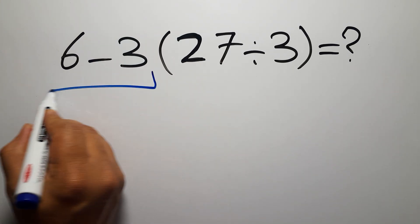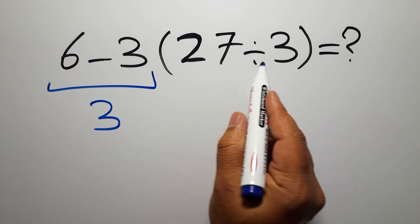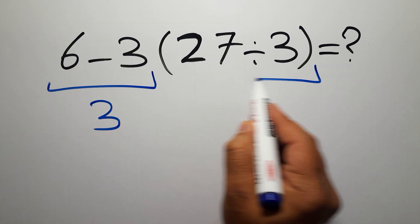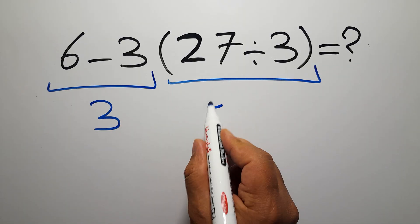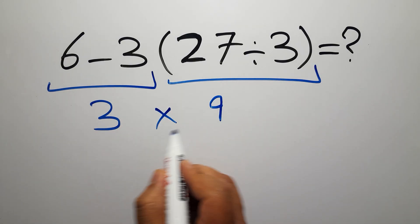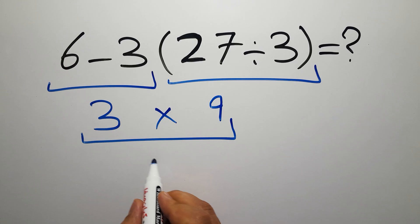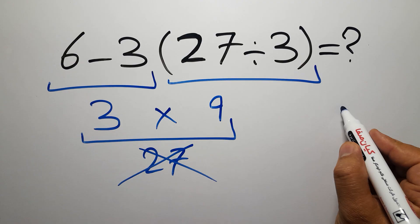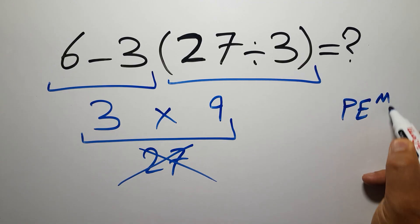6 minus 3 gives us 3, and here we have 27 divided by 3 which equals 9, so 3 times 9 gives us 27. But this answer is not correct because according to the order of operations, which is PEMDAS...